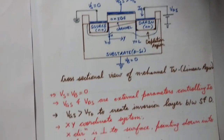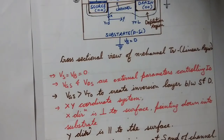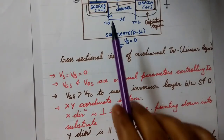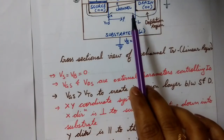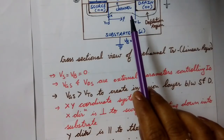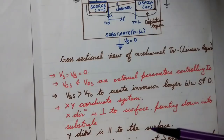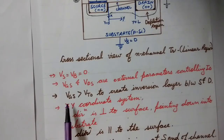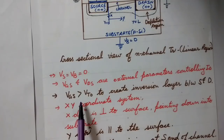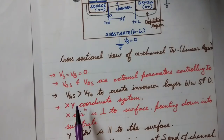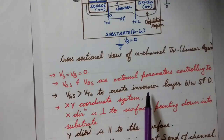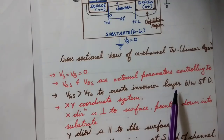The voltages VGS and VDS are the external parameters which control the value of ID. For current flow we require channel formation, which is actually a surface inversion layer. For this, the gate-to-source voltage VGS must be greater than the threshold voltage VT0 — this is necessary for the creation of the inversion layer between the source and the drain.